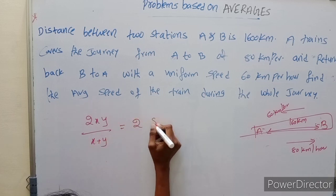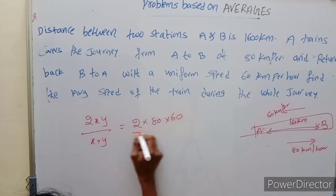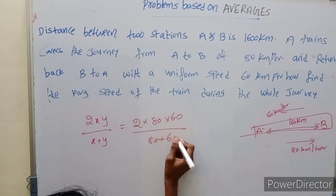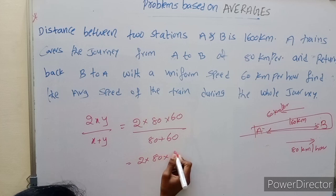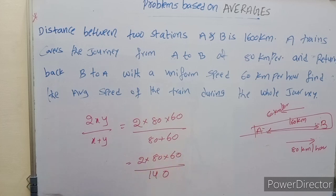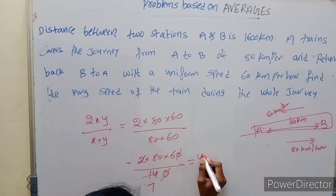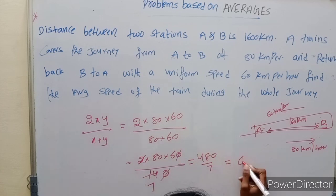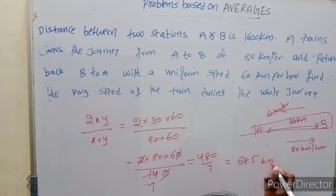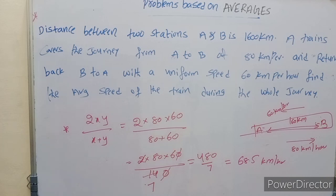X is 80 and Y is 60. So average speed equals 2 into 80 into 60 divided by 80 plus 60, which is 9600 divided by 140, equals approximately 68 kilometers per hour. This formula is used specifically when distance is the same for both forward and return journeys but speeds are different.